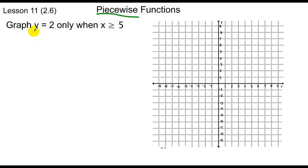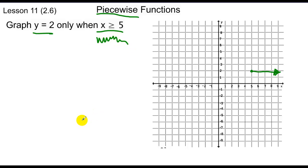I want to graph the line y equals 2, but only when x is greater than or equal to 5. We know y equals 2 is a horizontal line. Since x starts at 5, I go up to 2 and put a closed circle because 5 is included, then y equals 2 continues to the right forever with an arrow. If x were strictly greater than 5, I'd put an open circle.